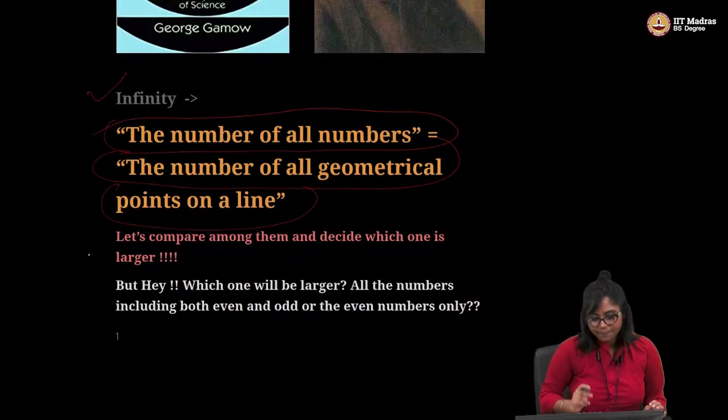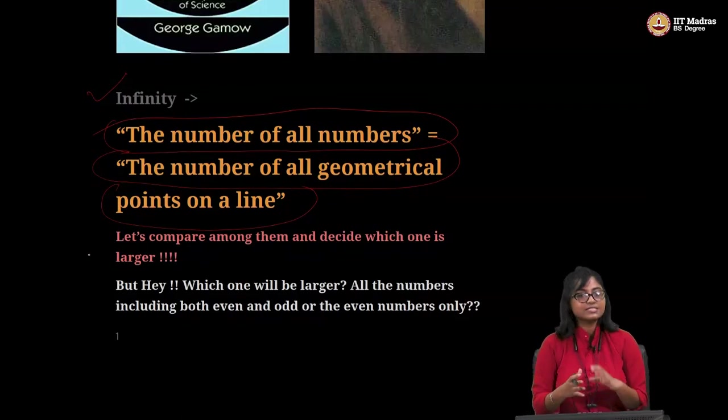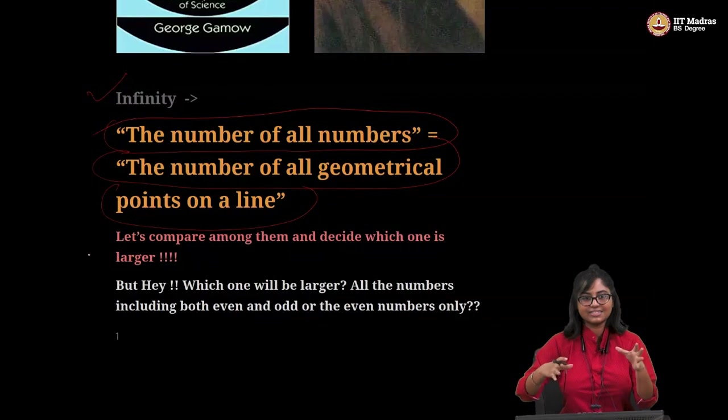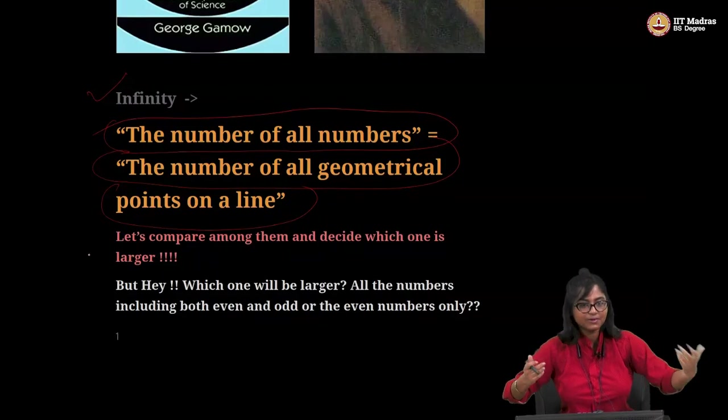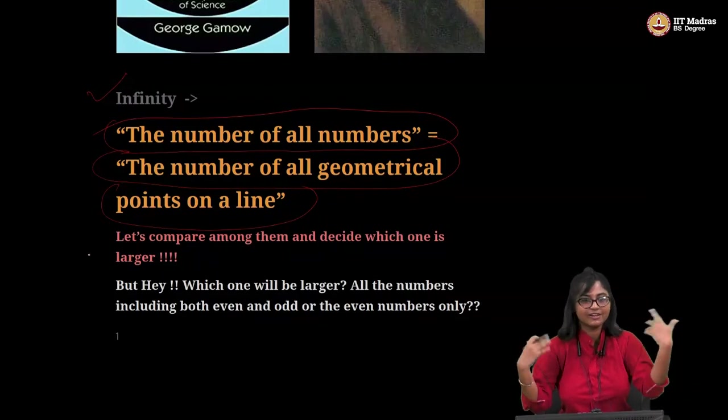Now he asked, let's compare among them and decide which one is larger. Now, how can it make sense? Right. Like infinity is infinite. It is uncountable. Like you have one infinity. You have other. How can it be? We can compare which one is larger. It is large. That's it. We cannot imagine beyond that.